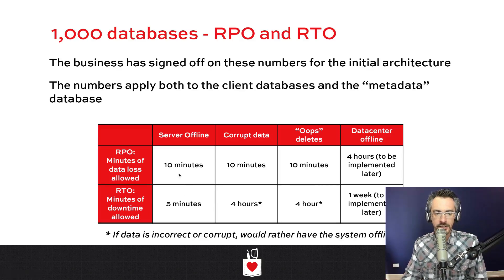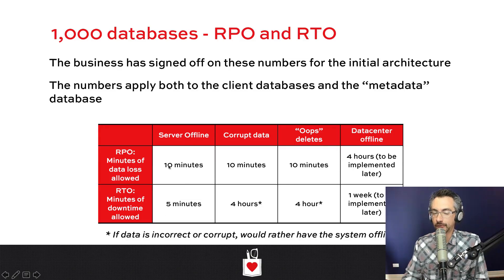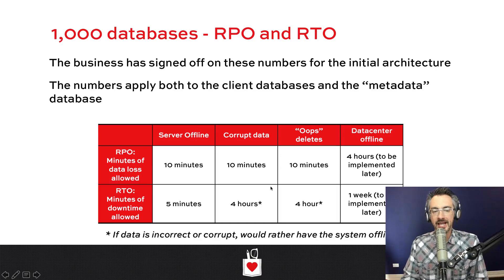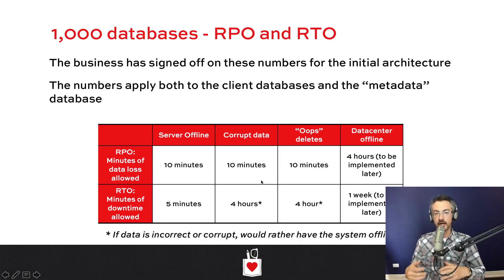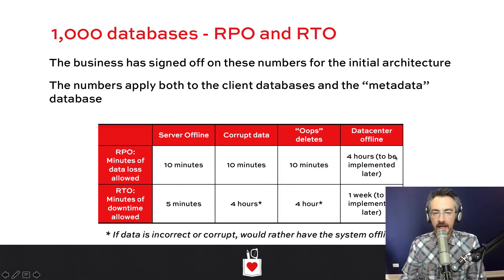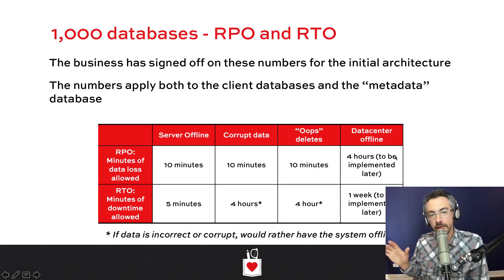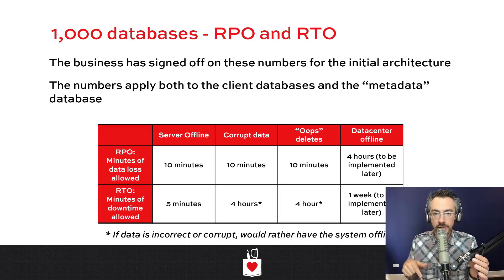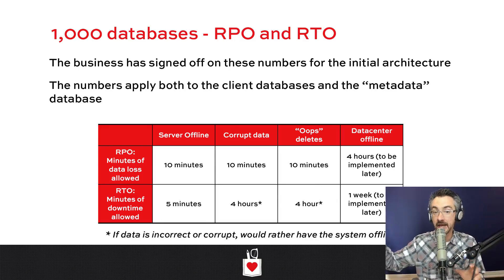Here are their RPO and RTO requirements. In the event of a server going offline, they're willing to lose 10 minutes of data and be down for five minutes — they're actually okay losing more data than downtime. For corruption or accidental deletes, they're okay being down for four hours. In the event of losing a data center, they'd like to lose no more than four hours of data and be back up within a week. You don't have to design that now, but whatever solution you build should be extensible toward that goal.